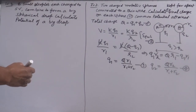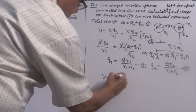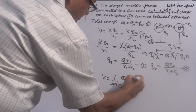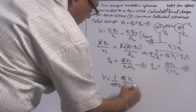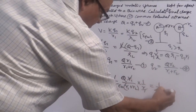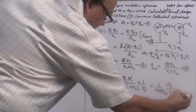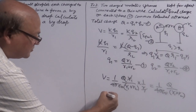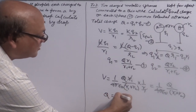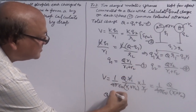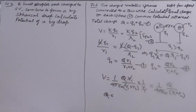Using the value of Q1 to find the common potential: V = (1/4πε₀) · Q1/R1 = (1/4πε₀) · [QR1/(R1+R2)] · (1/R1). The R1 cancels, giving common potential V = (1/4πε₀) · Q/(R1 + R2). Total charge remains Q1 + Q2 = Q, confirming charge conservation.